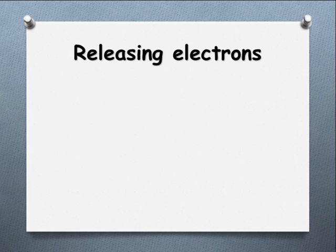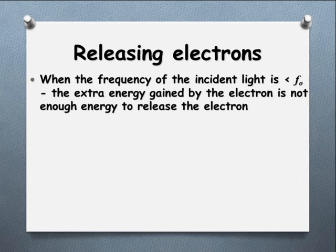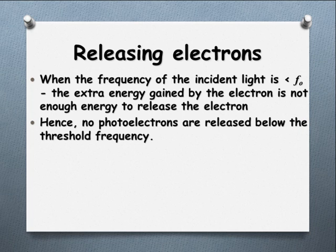Let's look at what's occurring to release these electrons. If we get incident light that's less than the threshold frequency, that means it's not going to have enough energy to be released. It actually has to have more energy than the work function.